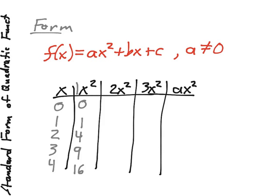If our a value turns to 2, order of operations tells us that we're going to square our x value and then multiply by a, so in this case, 2. 0 squared is 0 times 2 is 0, 1 squared is 1 times 2 is 2, 2 squared is 4 times 2 is 8,